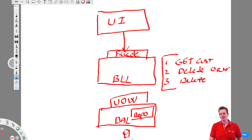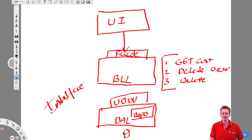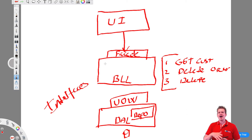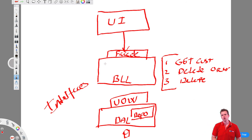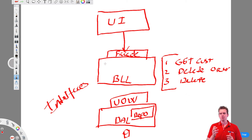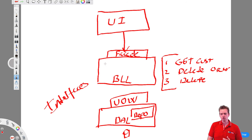So we're talking about the facade pattern, the unit of work pattern, and the repository pattern. One big thing you'll have to work with now is interfaces, because I want to start making all of these things with a contract defining how they should work before I actually start building them. So the next big thing will be interfaces.